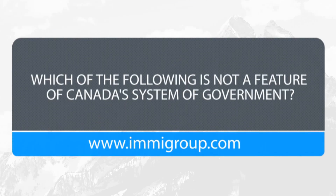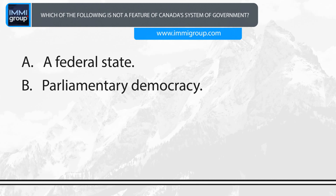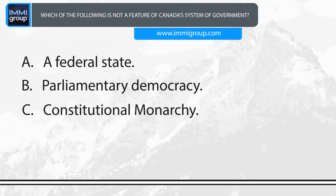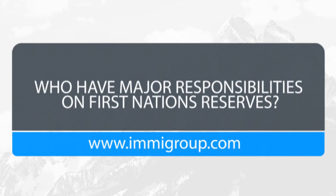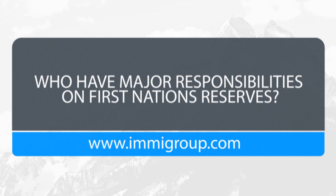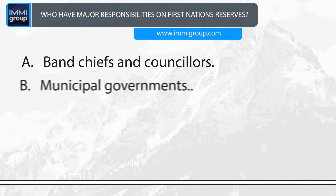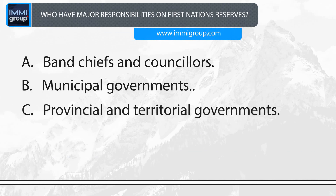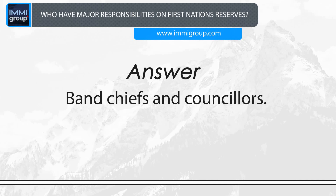Which of the following is not a feature of Canada's system of government? A. A federal state. B. Parliamentary democracy. C. Constitutional monarchy. D. Dictatorship. Answer: Dictatorship. Who have major responsibilities on First Nation reserves? A. Band chiefs and councillors. B. Municipal governments. C. Provincial and territorial governments. D. Federal government. Answer: Band chiefs and councillors.